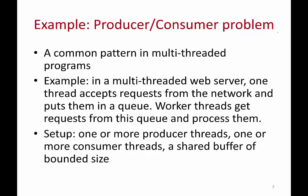The next example with condition variables is the producer-consumer problem, a common pattern in multi-threaded programs. You have multiple threads — one is the producer, another is the consumer — and they share a buffer. The producer keeps producing items into the buffer and the consumer keeps consuming items from it. You need mutual exclusion on the buffer to avoid concurrent access, but you also need signaling: if the buffer is full, the producer should sleep and the consumer should wake it up; if the buffer is empty, the consumer should wait and the producer should wake it up. Condition variables are used to achieve this.